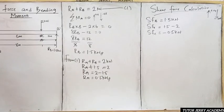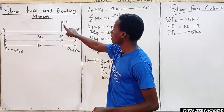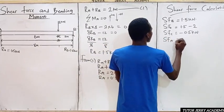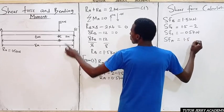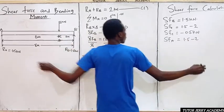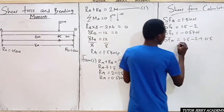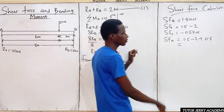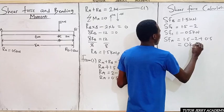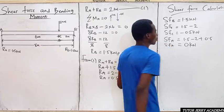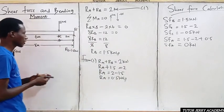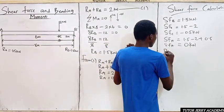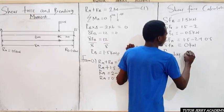For the shear force at A: it equals 1.5 minus 2 plus 0.5. That gives us 2 minus 2, which equals 0. So the shear force at A is 0 kilonewtons. That completes our shear force calculations.